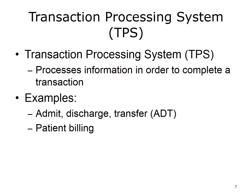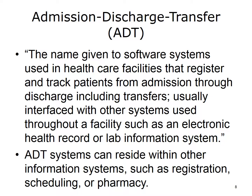A Transaction Processing System processes information in order to complete a transaction. Two examples are the Admission, Discharge, Transfer (ADT) and patient billing systems. AHIMA defines the ADT system as software used in healthcare facilities that registers and tracks patients from admission through discharge, including transfers, usually interfaced with other systems used throughout a facility, such as an electronic health record or lab information system. ADT systems are typically not stand-alone, but rather part of other systems. Some examples include pharmacy, registration, scheduling, or a lab system that may have ADT functionality.